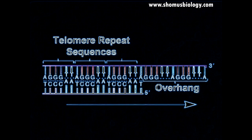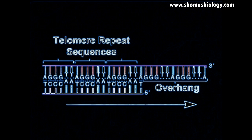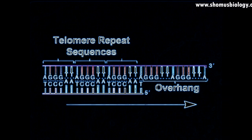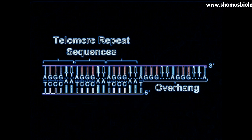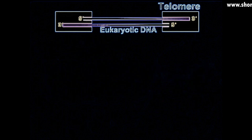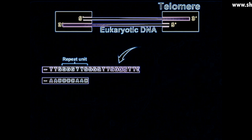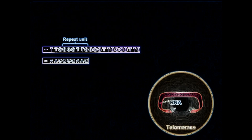Since DNA replication can only proceed in the 5' to 3' direction and requires a primer, it is not possible for DNA polymerase to replicate the 3' end of linear chromosomes. If this problem were not corrected, chromosomes would be shortened with each cycle of DNA replication. The addition of telomeric repeat sequences by an enzyme complex referred to as telomerase ensures that this shortening does not occur.